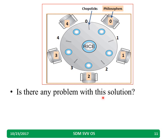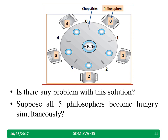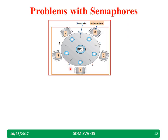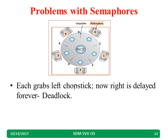Is there any problem with this solution? Suppose all five philosophers become hungry at the same time and each picks up one chopstick. Then each waits for the second chopstick, and they wait for each other forever. This situation is called a deadlock, and it is one problem we will face.